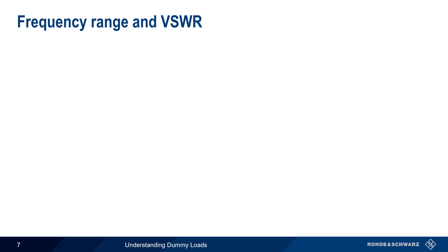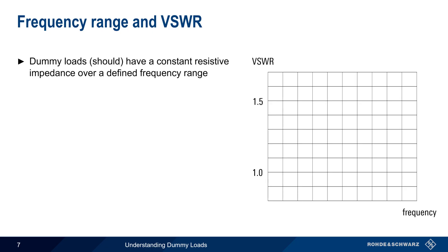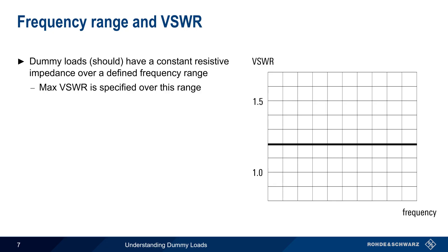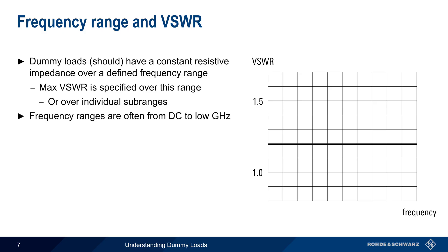Next let's talk about dummy load characteristics, starting with frequency range and VSWR. A dummy load should have a relatively constant, purely resistive impedance over a given frequency range, and this is most often specified in terms of a maximum voltage standing wave ratio or VSWR. A typical dummy load will have a usable frequency range from DC to several gigahertz, and VSWR values over this range are usually 1.5 or less.